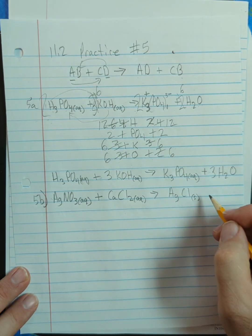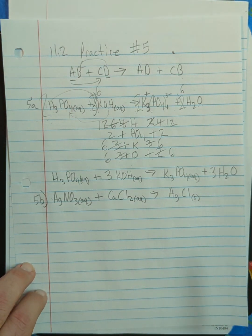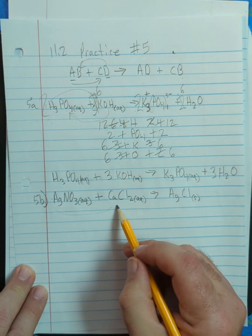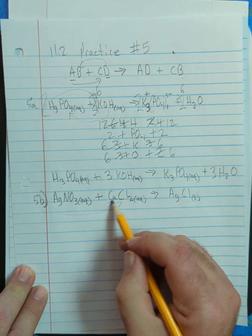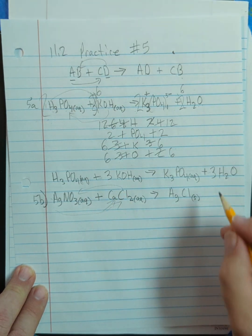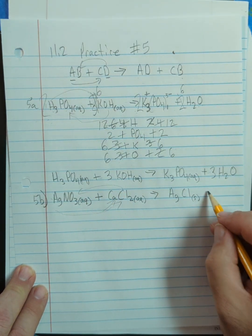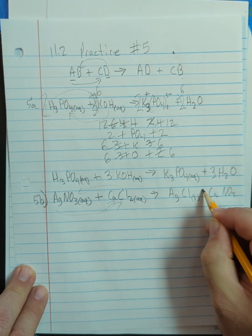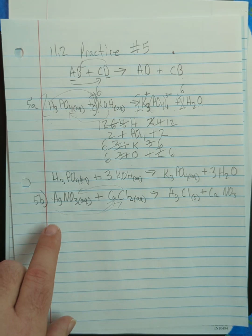All right. Now, if we get silver chloride, that silver is replacing the calcium, and the calcium is replacing the NO3. So that means we're going to have calcium nitrate as the other thing.